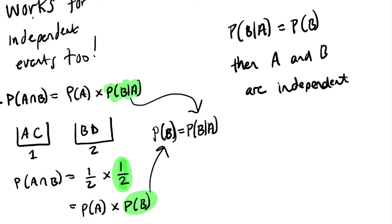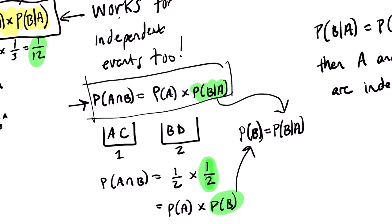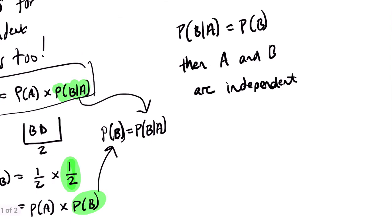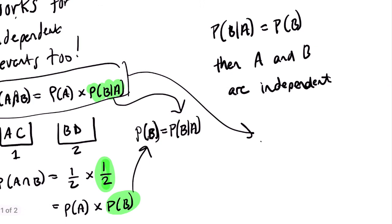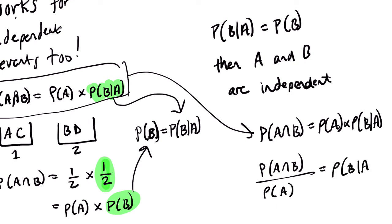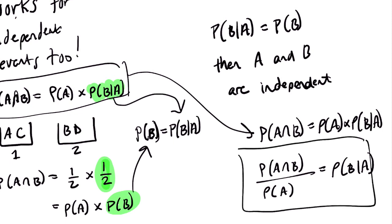The last thing to consider is some algebraic reasoning. If P(A and B) equals P(A) times P(B|A), we could divide both sides by P(A) and get P(A and B) over P(A) equals P(B|A). That's another typical definition you see for conditional probability, connected to the intersection definition. This is useful because sometimes you're told the probability of the intersection and the probability of one event, and you need to find P(B|A) — you just divide those two values to get the answer.